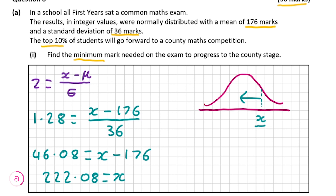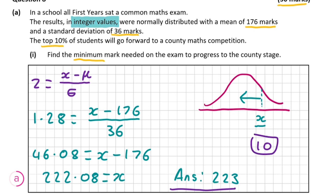Since the results were given in integer values and 228.08 is not a whole number, we must round. Normally we'd round down, but rounding down would place the student in the bottom 90%. So we must round up to put us inside the top 10%. Therefore our final answer is a score of 223 marks, and finding this gives you the full 10 marks for this question.